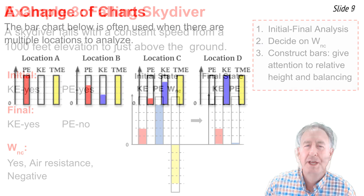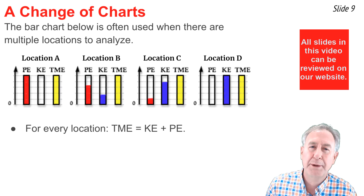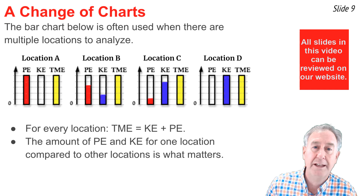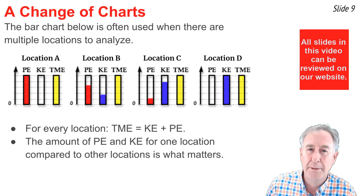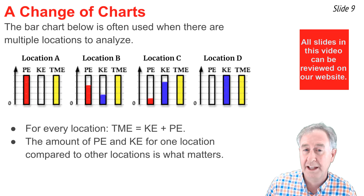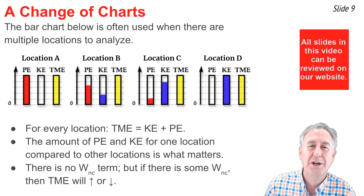This bar chart is often used when conducting an energy analysis for a variety of locations, not just the initial and final state. The total mechanical energy bar is always equal to the KE plus PE bar at every location. It's the relative height of the PE and KE bars that's important as you read left to right — in this case the PE bars decrease from A to B to C to D while the KE bars increase, indicating the object is losing height and gaining speed. If there were W-NC terms, the total mechanical energy would be increasing or decreasing.